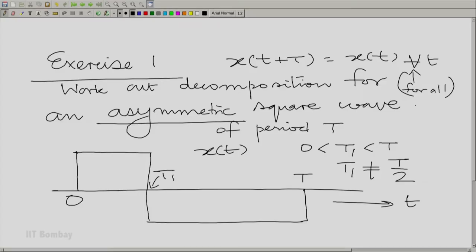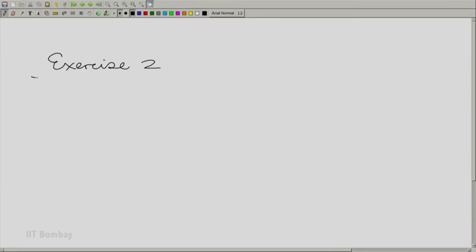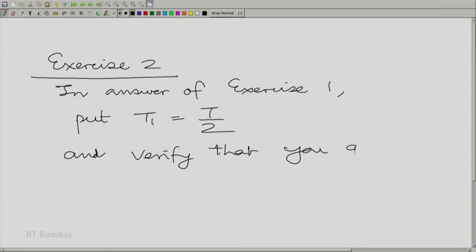Now, what you must also do is to look at the expression that you get here in general. And then, of course, there is nothing wrong in substituting t1 equal to T/2. You must check that. Exercise 2: In the answer of exercise 1, put t1 equal to T/2 and verify that you get what you got for the symmetric square wave. That's exercise 2 for you.